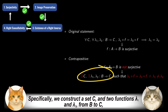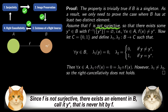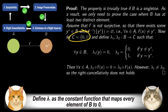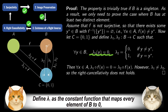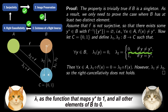Specifically, we construct a set C and two functions λ₁ and λ₂ from B to C such that their compositions with f are equal, but λ₁ and λ₂ themselves are not. Since f is not surjective, there exists an element in B — call it y* — that is never hit by f. Let C be the set {0, 1}. Define λ₁ as the constant function that maps every element of B to 0, and λ₂ as the function that maps y* to 1 and all other elements of B to 0.